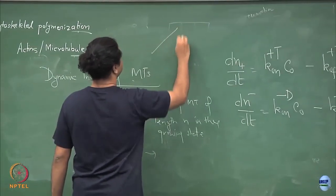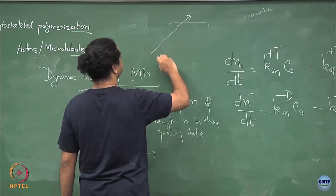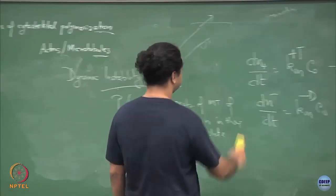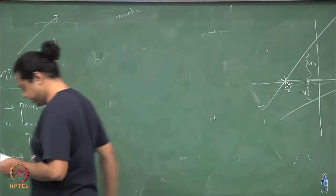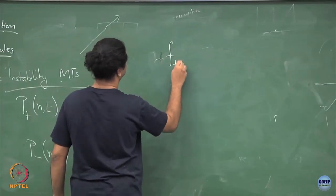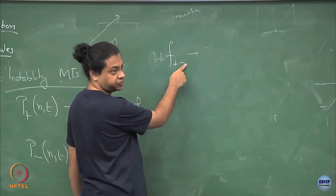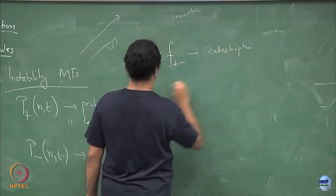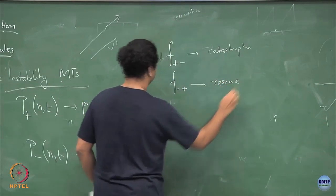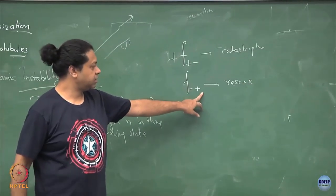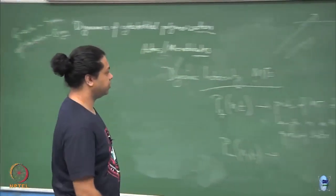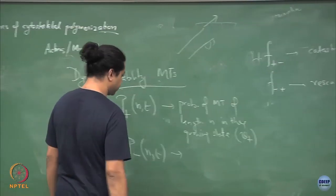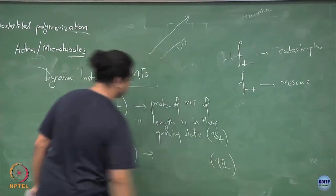So I have these microtubules. These microtubules can either be in the growing state, where they are adding monomers, or in the shrinking state, where they are losing monomers. And they convert from one state to another with certain frequencies, which let me say are f-plus-minus and f-minus-plus. When it grows, it grows with some rate V-plus, adding subunits, and when it shrinks it is losing subunits with some rate V-minus.